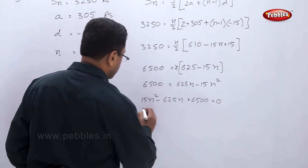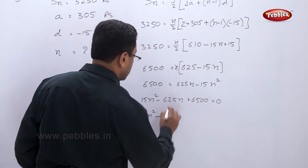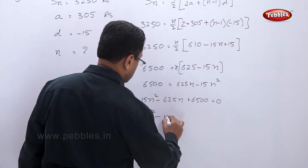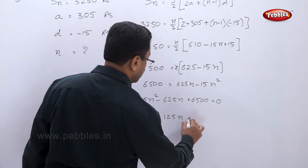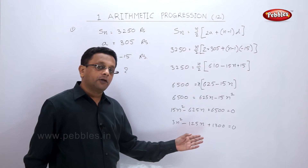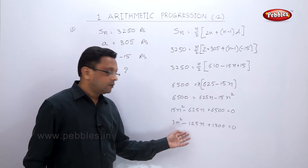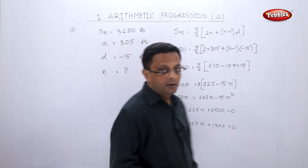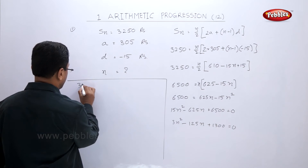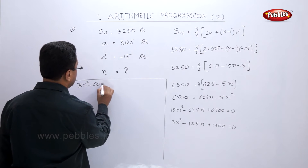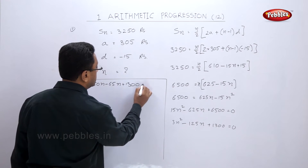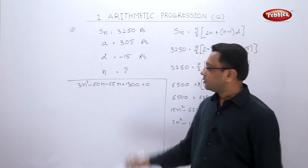Dividing by 5 gives us 3n² − 125n + 1300 = 0. Please pause the video here and solve this quadratic equation to get the value of n. Factoring: 3n² − 60n − 65n + 1300 = 0.